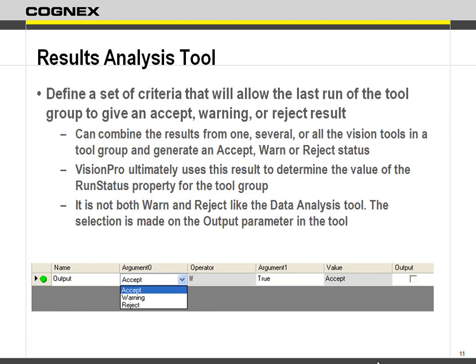The results analysis tool allows you to set up a group of criteria — a group of tests — that decides whether you're accepting, warning, or rejecting your results. You choose only one of the three outcomes. The final part of a results analysis tool is deciding what your output is going to be — whether it's going to accept or not.